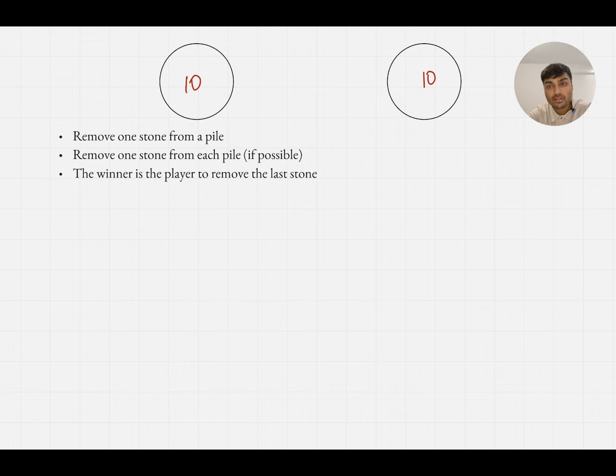So let's understand what's going on here. We have two piles of stones, each with 10 stones in initially. And we have two players, player A and player B. Player A will start and they're going to take it turn by turn. And on their turn, they can either remove one stone from a pile or they can remove one stone from each pile, if possible. So of course, if there was a pile with zero stones in, obviously you can't remove one stone from each pile. But provided both piles have at least one stone in, the player can either remove one stone from both piles or just pick one pile and remove one stone from it.